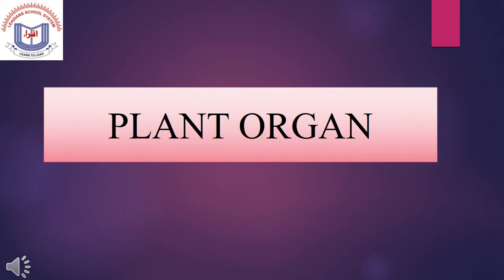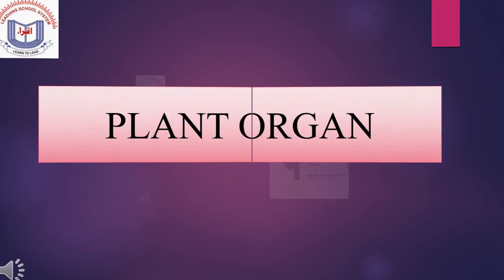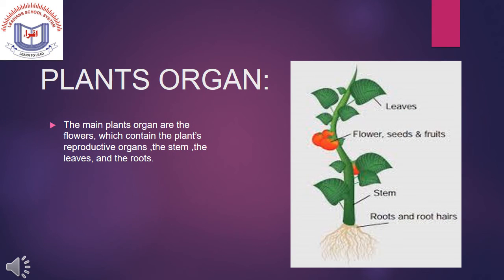About Plant Organs: The main plant organs are the flower, which contains the plant's reproductive organs, and the stem, leaves, and root.